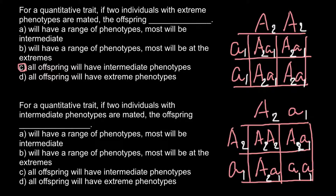As you can see, there is a range of phenotypes and most will be intermediate. The intermediate score of 3 appears 2 out of 4 times. So the correct answer is A: a range of phenotypes, most will be intermediate. That is all for today — thank you for your attention. Please subscribe for my new videos, which I post almost every day, and thumbs up if you like this video.